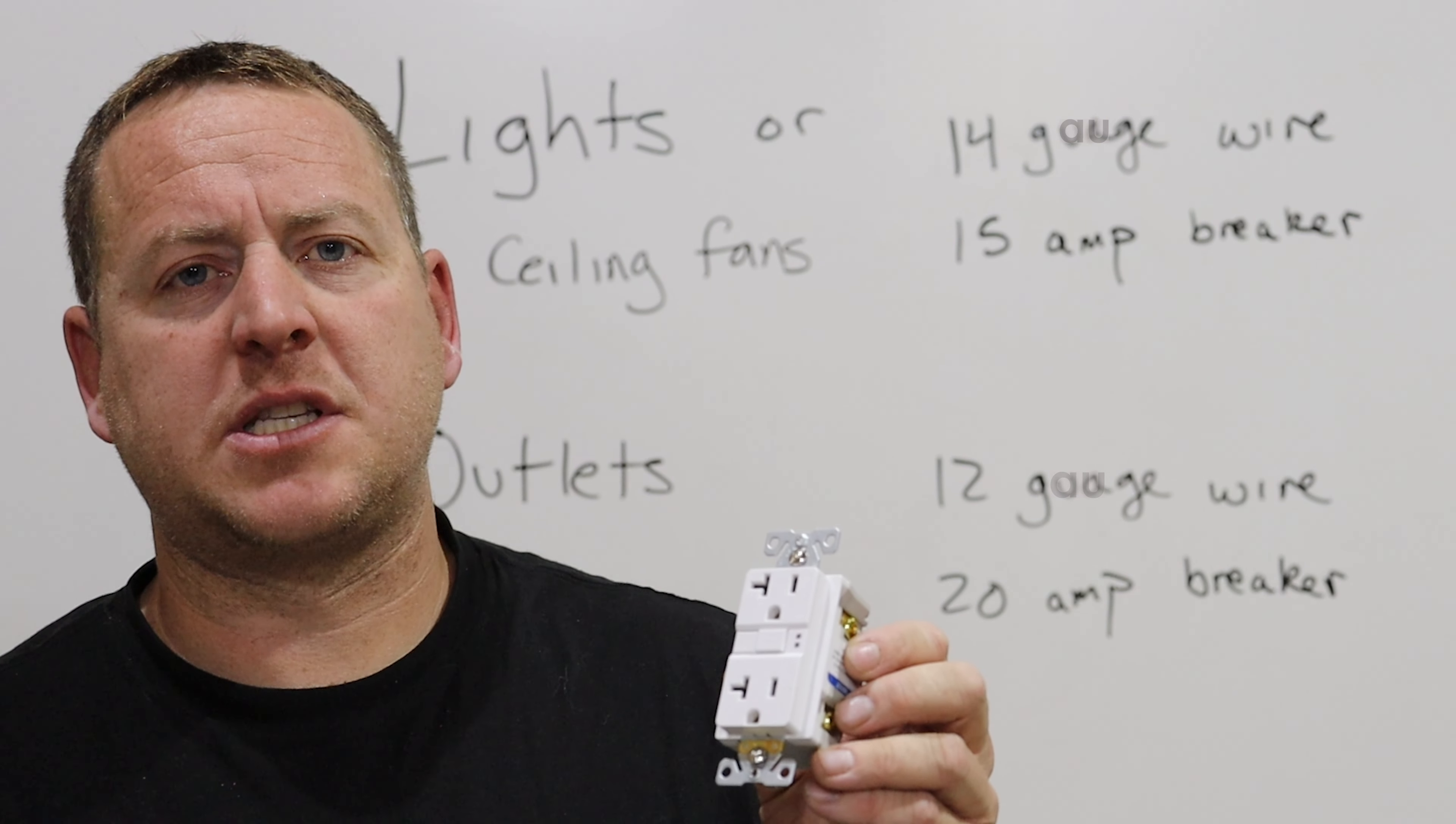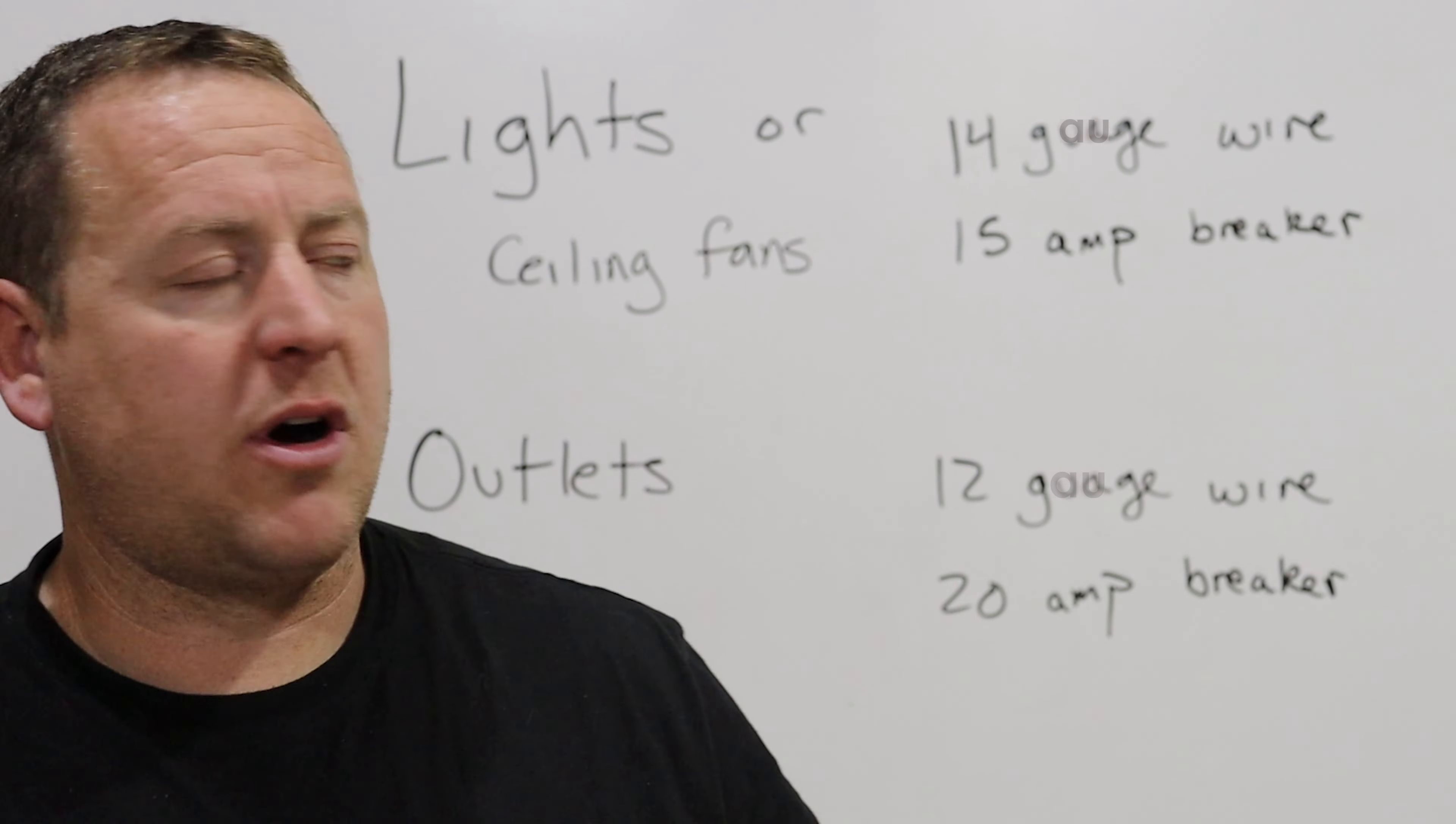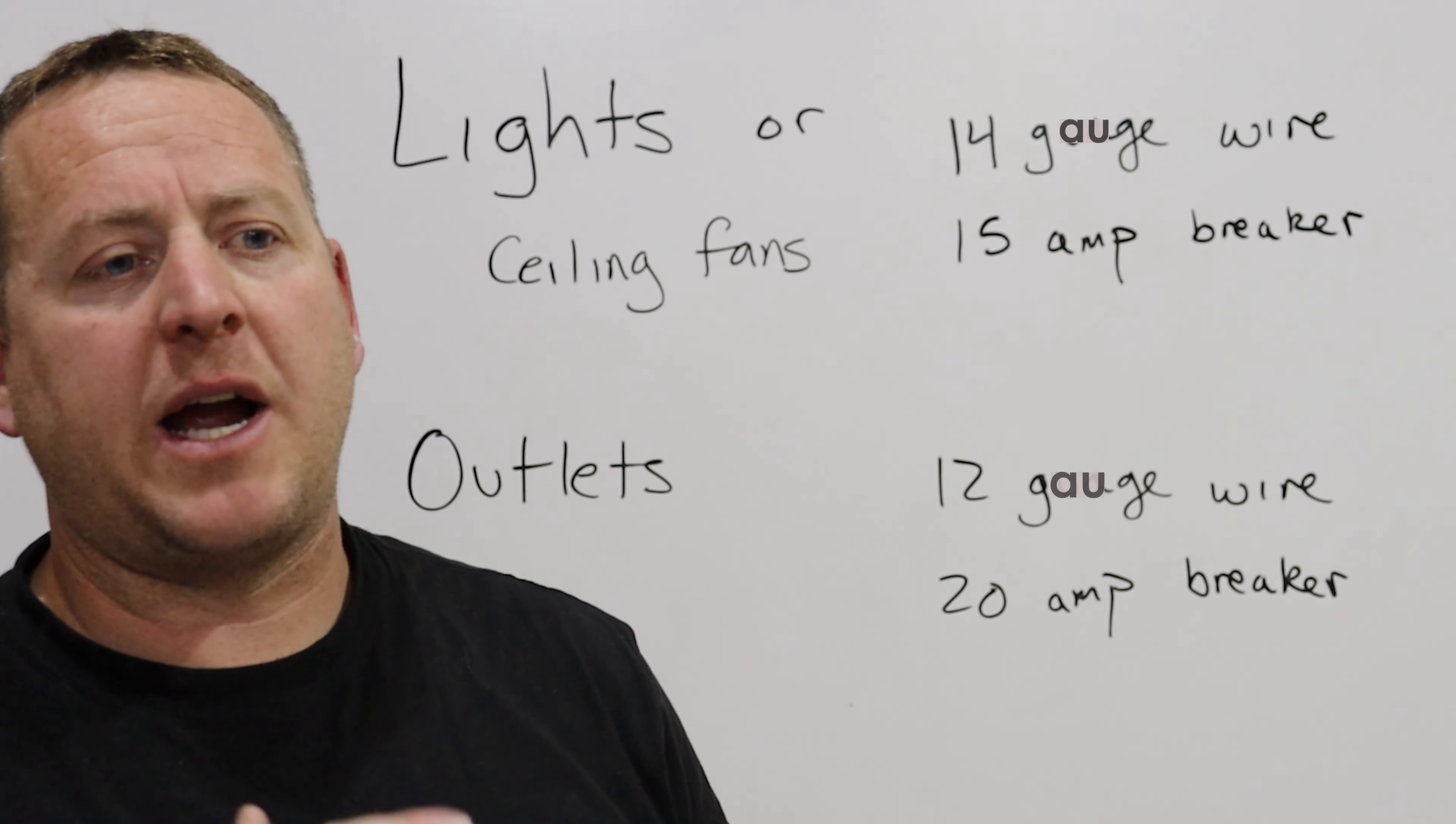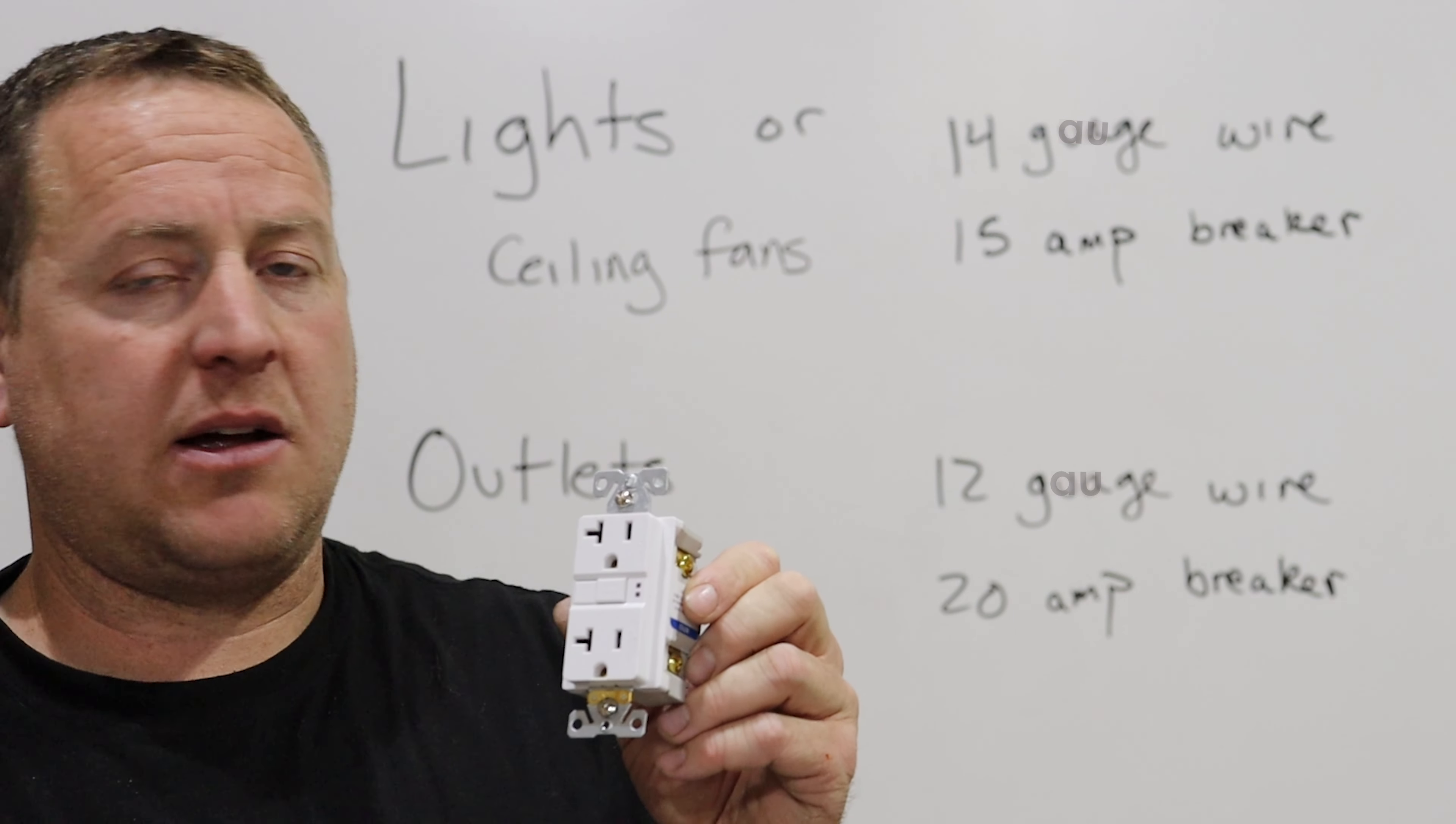Your outlets and switches also have amperage ratings. For all my lights I use 15 amp wire—the 14 gauge wire with a 15 amp breaker. For all my outlets, they're going to be 20 amp, so I got the outlets and the GFCI outlets rated for 20 amps.